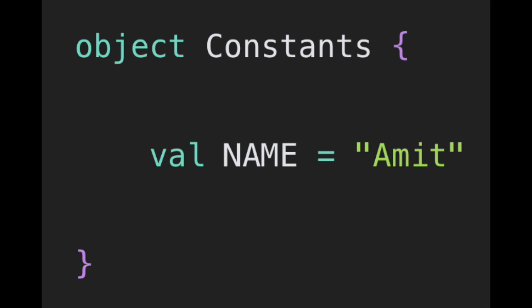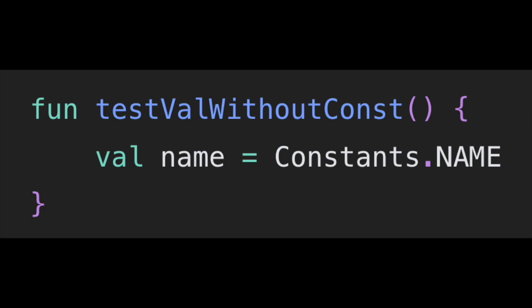Assume that we have an object class called Constants in Kotlin. Here I have written the constants and the val name is equal to 'Amit'. We must notice that we are not using the const keyword here. Now suppose we are accessing this name — I have created a function in which I am accessing Constants.name, so val name is equal to Constants.name.